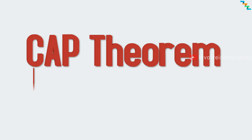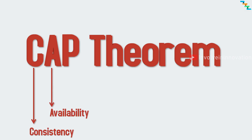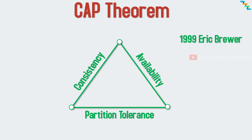In the CAP theorem, C stands for consistency, A stands for availability, and P stands for partition tolerance. CAP theorem was first advanced by Professor Eric A. Brewer during a talk he gave on distributed computing in 2000. If you try to draw a triangle with three sides as consistency, availability, and partition tolerance, the CAP theorem states that for any system only one edge is possible out of these three edges.